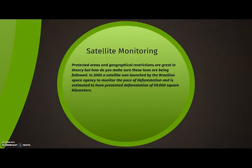Satellite monitoring. Protected areas and geographical restrictions are great in theory, but how do you make sure these laws are being followed? In 2006, a satellite was launched by the Brazilian Space Agency to monitor the pace of deforestation, and it is estimated to have prevented deforestation of 59,000 square kilometers.